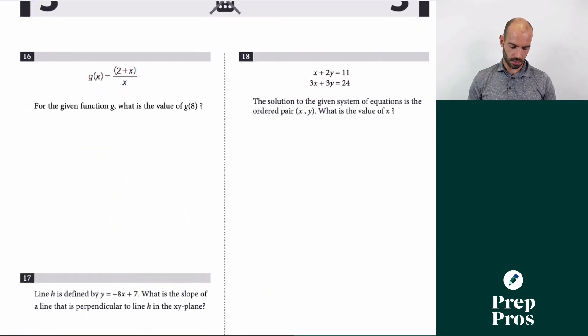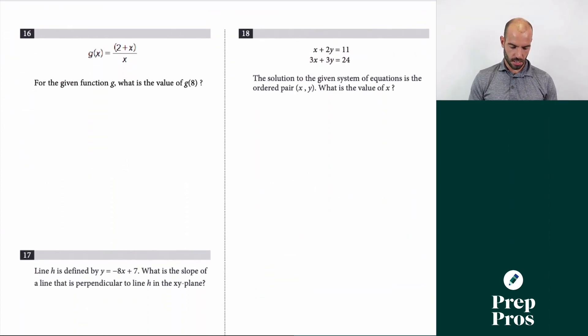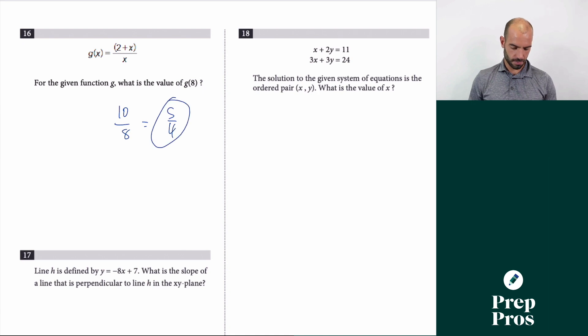Moving to the grid-ins. Number 16: find g(8). Plugging 8 into the function: (2 + 8)/8 = 10/8, which simplifies to 5/4.